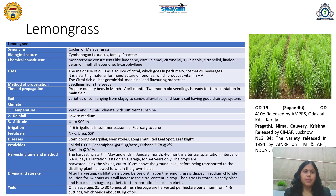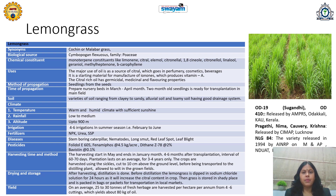Next important aromatic plant is lemongrass, well known to most Indians as a tea flavorant. Its synonym is cochin or malabar grass; in Marathi it is called gavticha. Biological source: leaves of Cymbopogon flexuosus, family Poaceae (Gramineae). Chemical constituents are volatile, class: monoterpenoids — limonene, citral, citronella, linalool, geraniol, caryophyllene, etc. Used as a perfume and flavoring agent in cosmetics, pharmaceutical, beverage, and food industries.